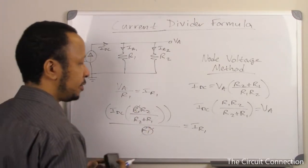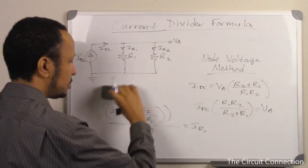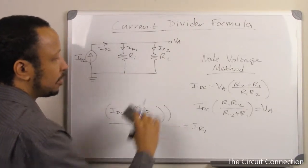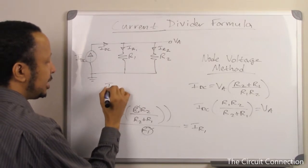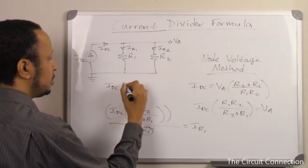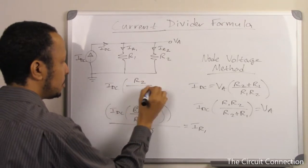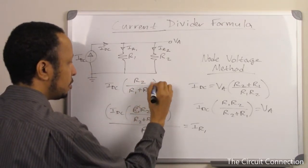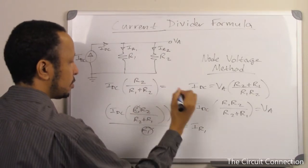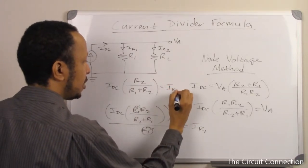What we are left with is that IDC times R2 over R1 plus R2 equals IR1.